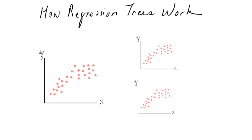If we were just to fit a simple linear regression onto the data, the model would look something like this. However, if we look at the data more carefully, we will see that actually the data on the left-hand side seems to be better modeled by a linear regression like this, while those on the right-hand side seem to be modeled by a flat regression line like that.